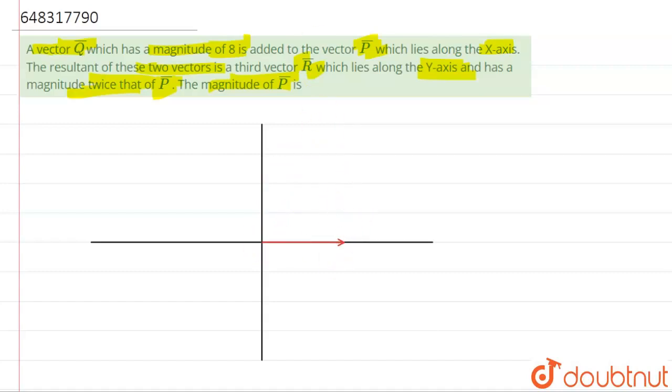And there is also a Q vector but we don't know where it is. And there is an R vector which is in the y-axis direction and it is double the magnitude of P. So the R vector will be in this direction, and it is double the magnitude of P, means this is 2P and this is P.